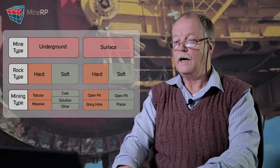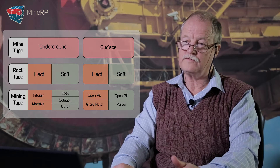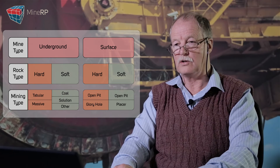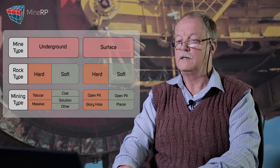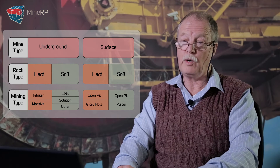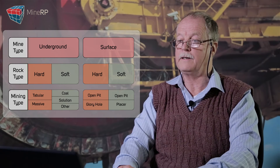Think of it as verging on oil and gas — fracking: pump high-pressure liquids down and release the gas. Underground soft also covers other things like phosphates, salts, and fertilizers — things we typically want to keep water away from while we're mining.